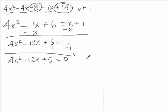Now we have this quadratic set equal to 0, and we know to solve that we need to factor. This factors into 2x minus 5 and 2x minus 1.